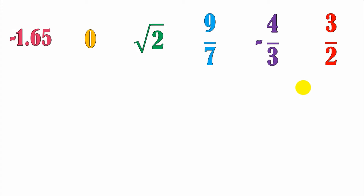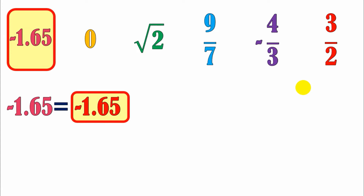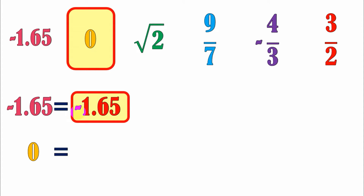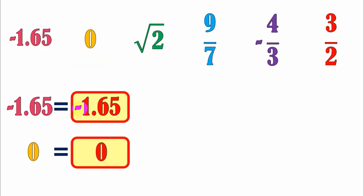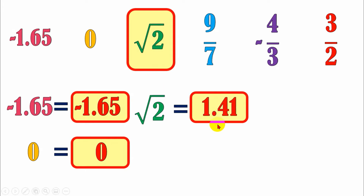Let's take negative 1.65 first. Negative 1.65 is already negative 1.65 — nothing to change from it, since it's already in decimal form, only that it is negative. Then next, let's have 0. Of course, 0 doesn't change either. Nothing to change from it. Then next, let's have the square root of 2. The square root of 2 can be changed, and that is equal to 1.41.